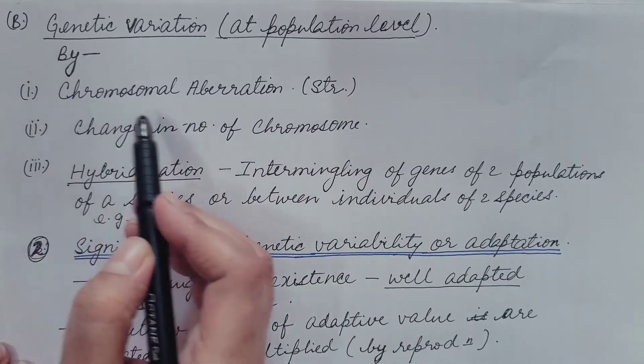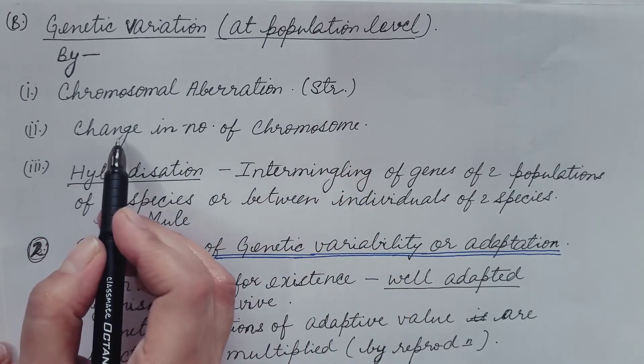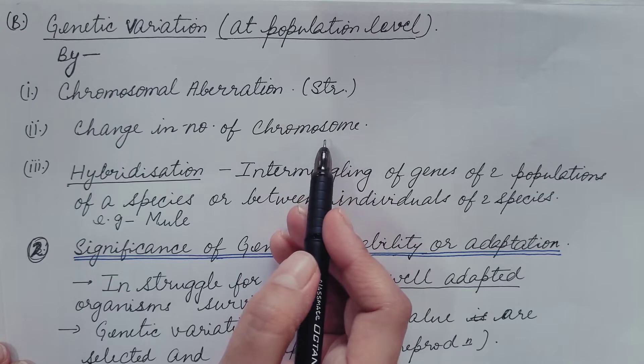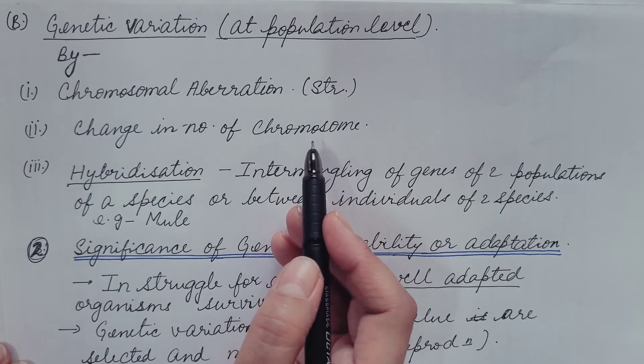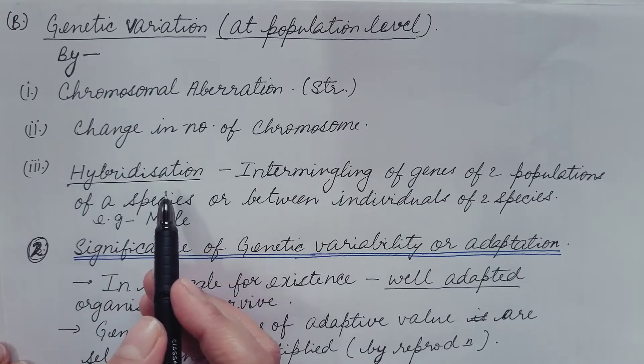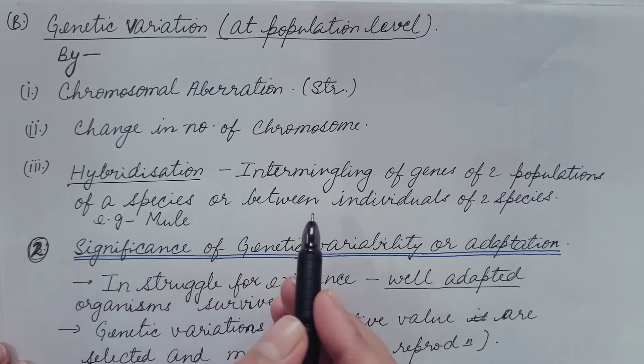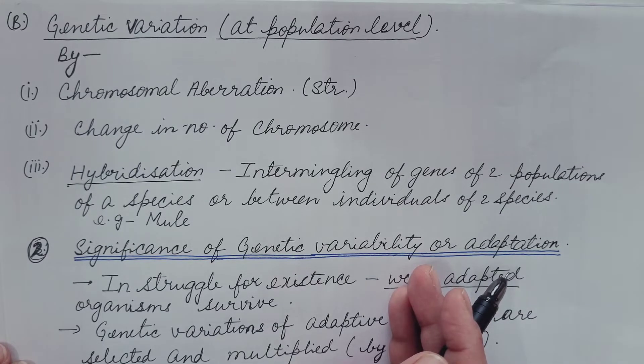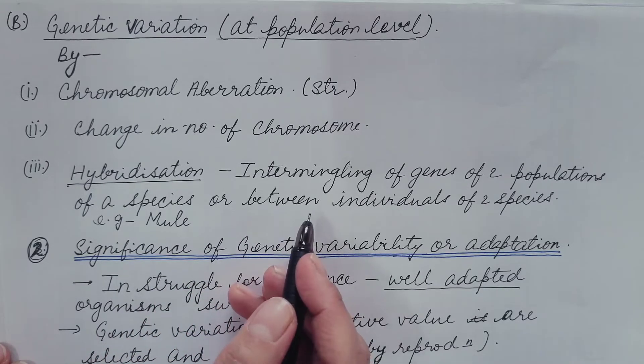This occurs by the chromosomal aberration which is the change in the structure of the chromosome. Then it also occurs by the change in the number of the chromosome which is known as euploidy. This chromosomal aberration and euploidy we have already discussed in genetics under separate topics. You can refer to my video. The link is given in the description box. And the third is hybridization. It is intermingling of genes of two populations of a species or between individuals of two species which otherwise do not freely interbreed. Example is mule. It is hybrid between horse and donkey.